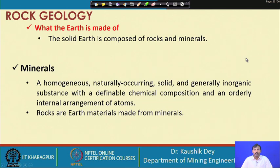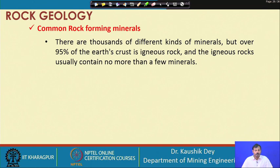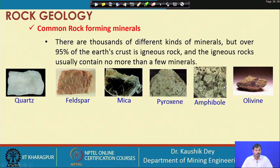While a mining engineer is excavating, they search for minerals. There are thousands of different types of minerals, but more than 95 percent of the earth's crust is igneous rock, and these igneous rocks contain only a few minerals. The main rock-forming minerals in igneous rock are quartz, feldspar, mica, pyroxene, amphibolite, and olivine. The properties of those rocks are dependent on the percentage of these minerals present.